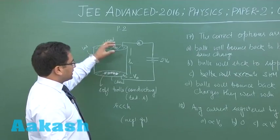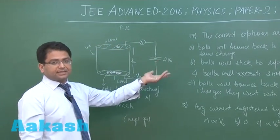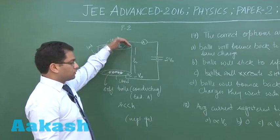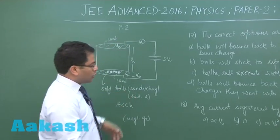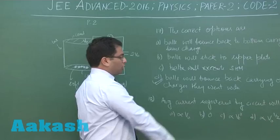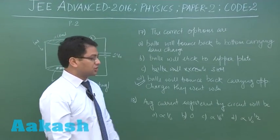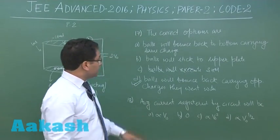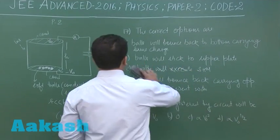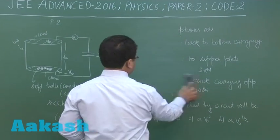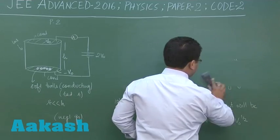The ball will go up, initially it's negative, when it goes up then it would get neutralized and again it would be positive, and the same story as it went up it would come back. So option number D is the correct one: the balls will bounce back carrying opposite charges they went with. So that was question number 17.